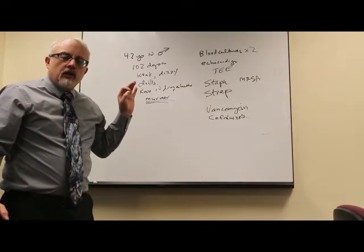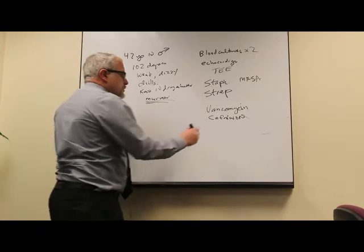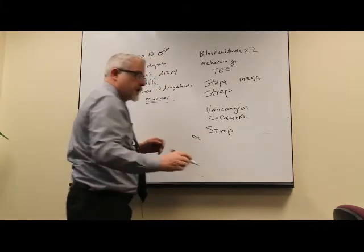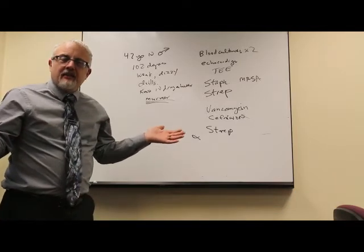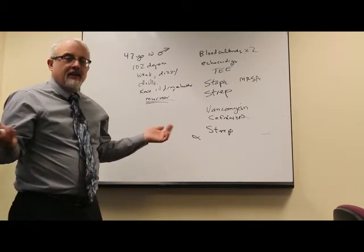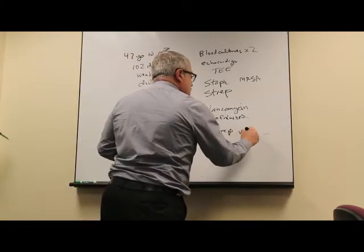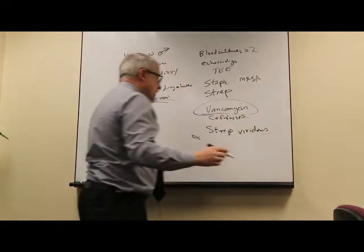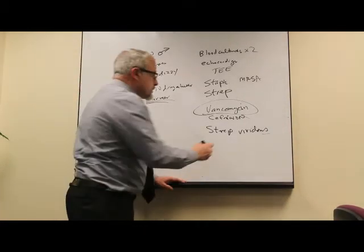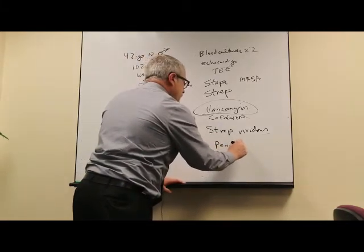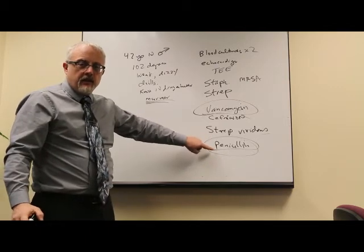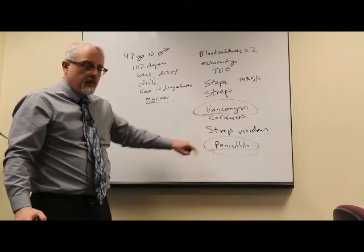But 36 hours later, the lab calls with blood cultures both showing strep, alpha hemolytic streptococci. And so you know, because you remember this, that that's either strep pneumo or strep viridans. And which of those causes endocarditis? Strep viridans, exactly. So this is a strep viridans endocarditis. Do you need vancomycin to cover strep viridans? No. Is vancomycin the most active drug against strep viridans? No. So you can switch that over to IV penicillin. This is good medicine. This is something that is going to happen in the clinical setting.